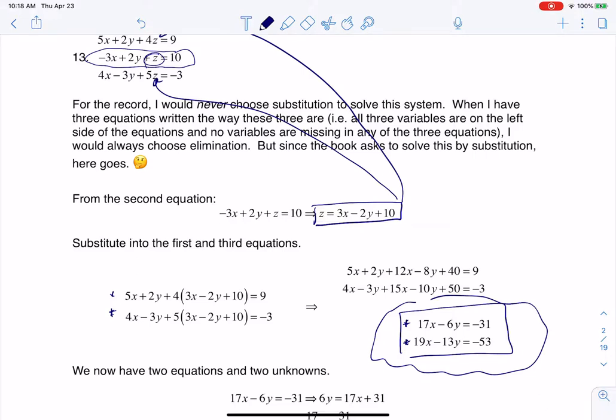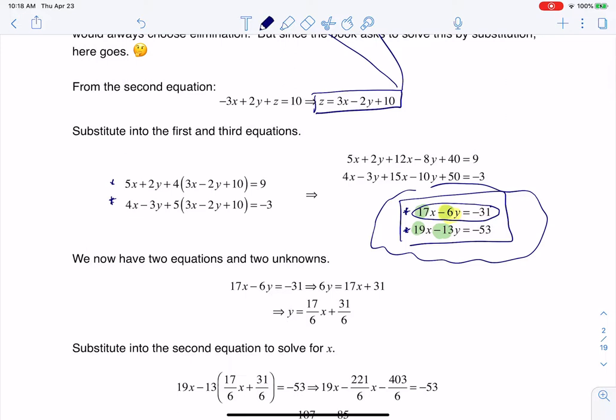So I went ahead and I opted to take this equation here and solve for y. There was no good option. If you look at the coefficients, we had 17, negative 6, 19, and negative 13. None of those are 1. So I just opted to choose this term, the negative 6y, because it had the smallest of the four numbers. So that's where you see me solving for y in this first equation.